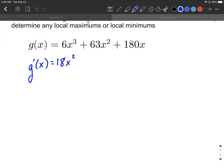We'll reduce the exponent by 1, and then we repeat on these next two terms. So we'll bring the 2 down, multiply it by the 63, get 126, reduce the exponent by 1, so it's x to the first power now. And finally, we have 180 is the derivative of 180x.